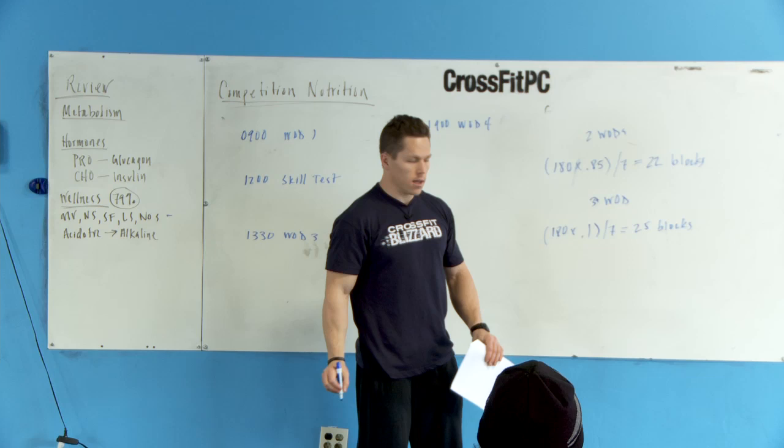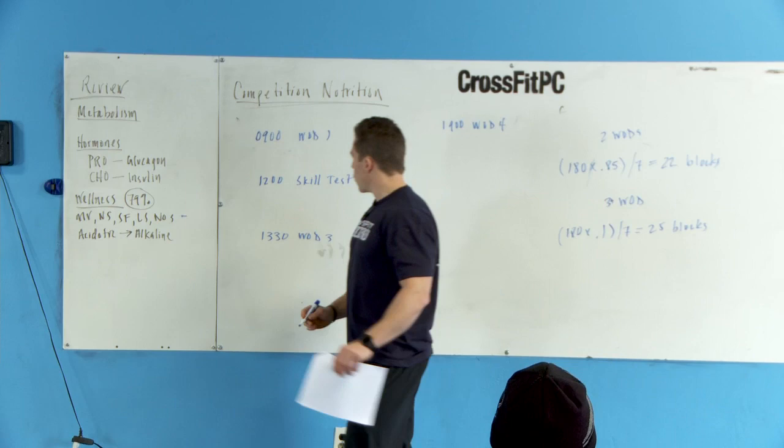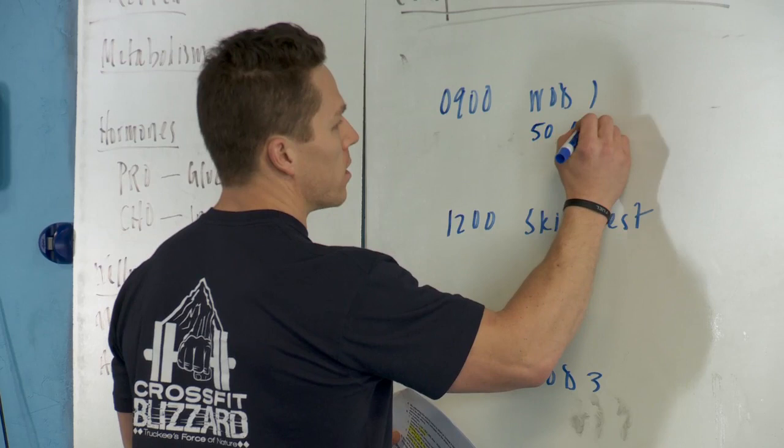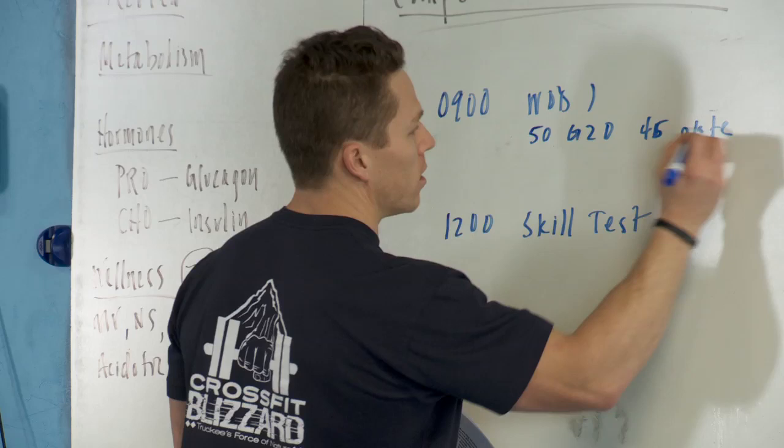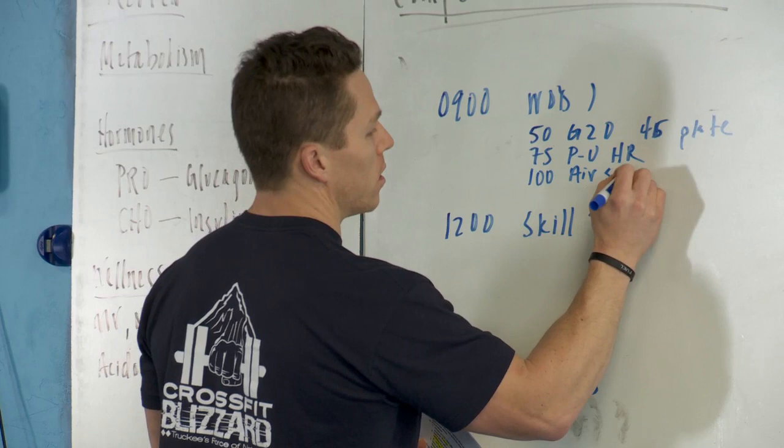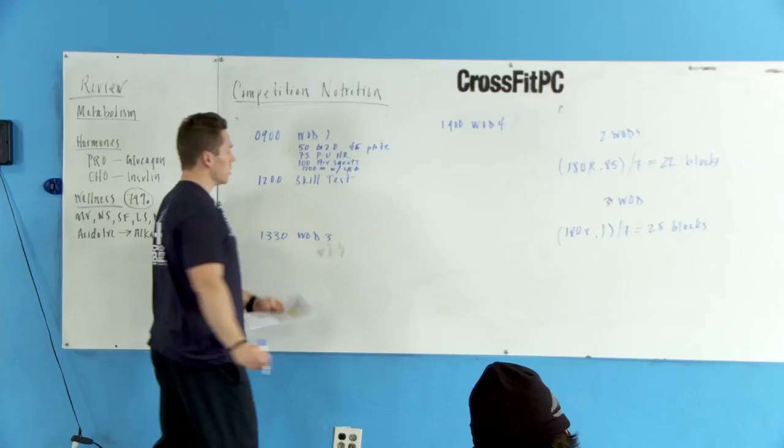Workout number one, I'm just going to describe it real fast: 50 ground to overhead with 45 pound plate, 75 push-ups hand release, 100 air squats, 1200 meter run, hill run with 45 pound plate. Demanding, absolutely very demanding.